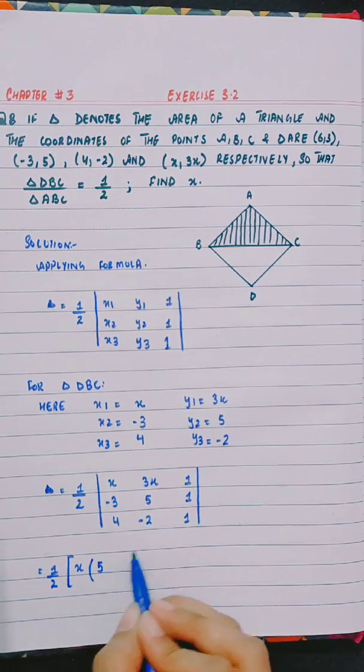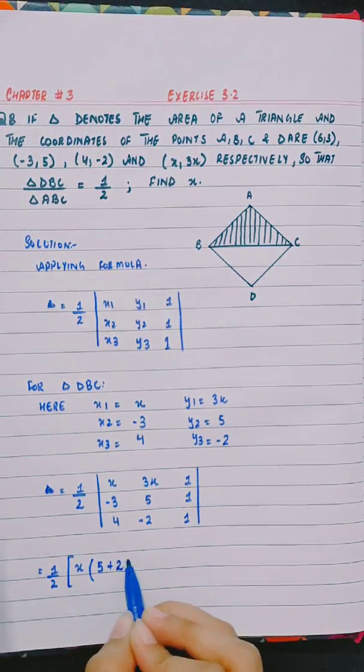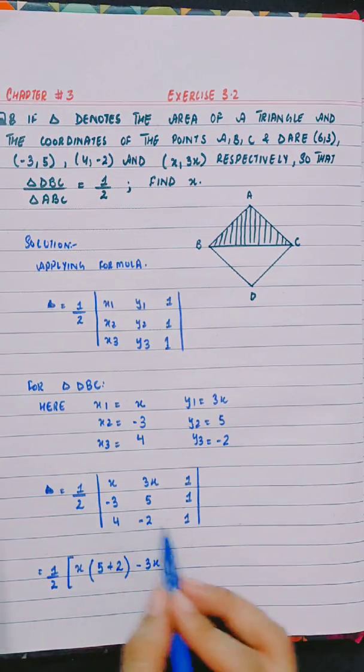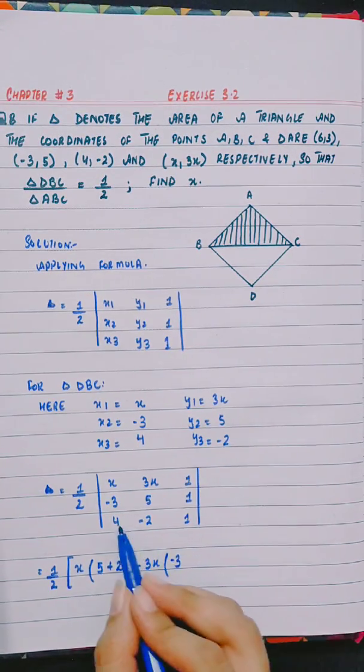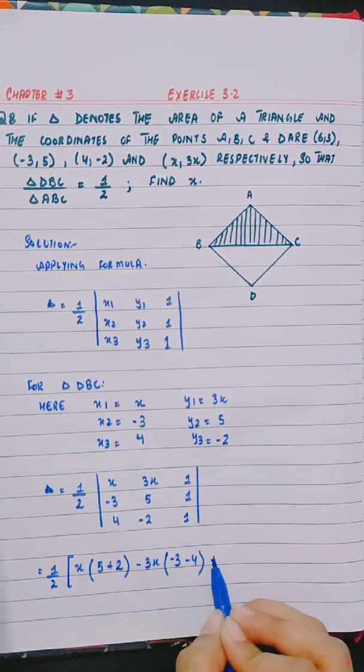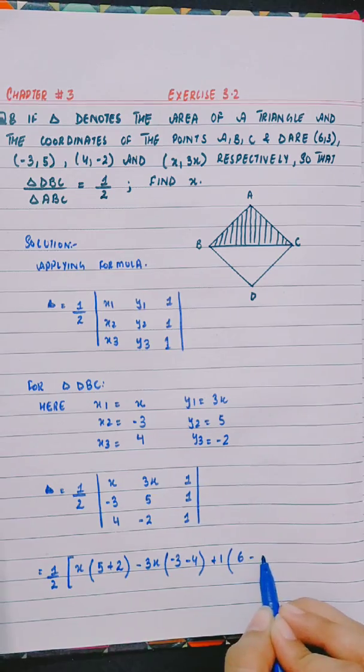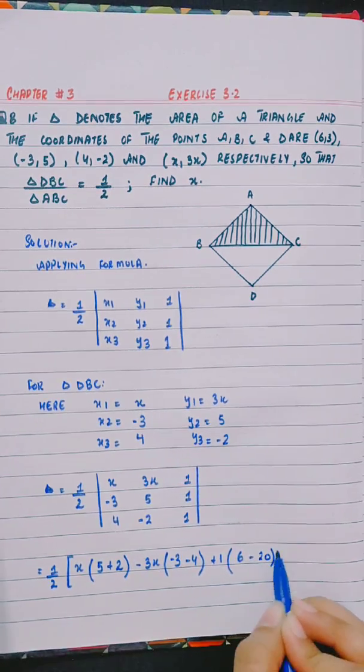Equals half times [x(5+2) - 3x(-3-4) + 1(-6-20)].